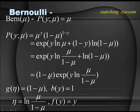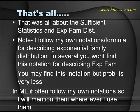This simplifies to (1 − μ) times exponential(y · log(μ/(1−μ))). Comparing again with the formula b(y) · g(η) · exponential(η^T f(y)), you get: g(η) = (1−μ), b(y) = 1, η = log(μ/(1−μ)), and f(y) = y. So for both Bernoulli and Gaussian distributions, f(y) comes out to be a scalar — specifically the target y_i for a particular training example x_i.